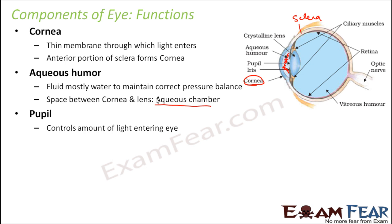Next is the pupil. It controls the amount of light entering the eye. It is a small opening through which light enters inside our eye. Neither too much nor too little light should enter, so the pupil can increase or decrease its size to control the amount of light entering. The pupil is a small aperture in front of the lens — a small hole through which the light enters.